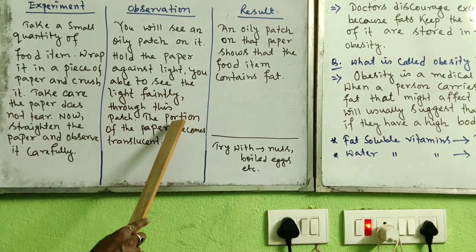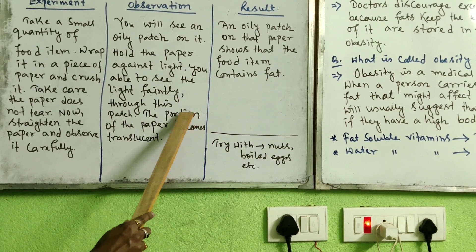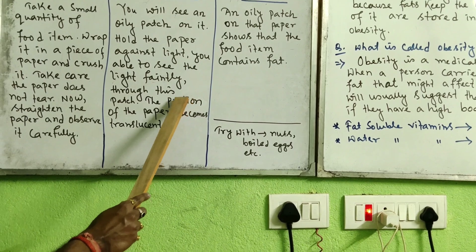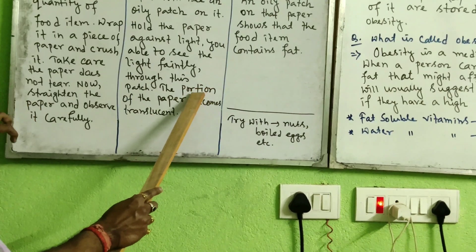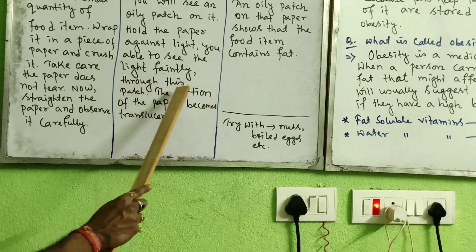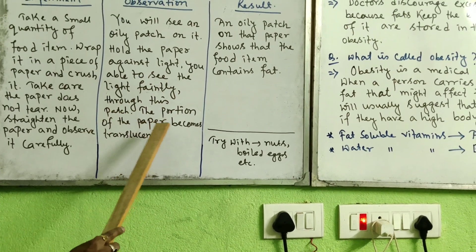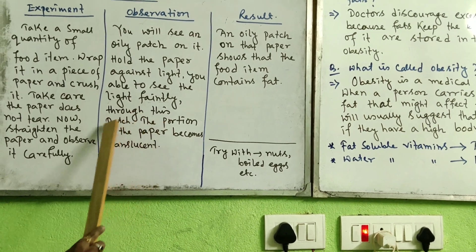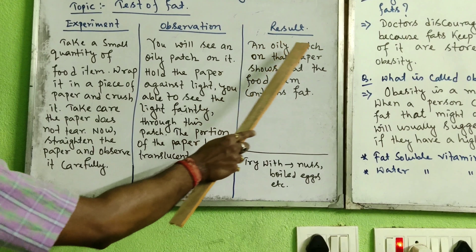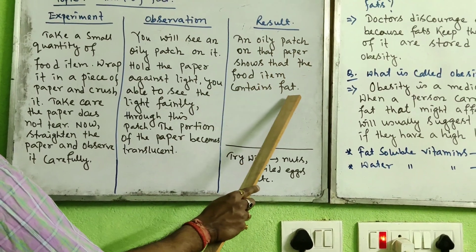Translucent materials allow only some light to pass through. Normally, light cannot pass through plain paper, but when there is an oily patch due to the presence of fat in the food item, light can pass through that portion faintly — making that part of the paper translucent. So an oily patch on the paper shows that the food item contains fat.